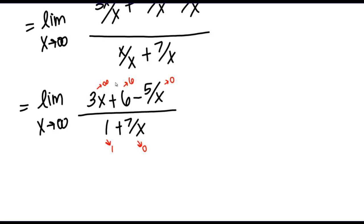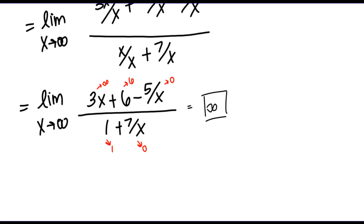So what do we have here? We have a bunch of constants — a 6, a 0, a 1, a 0 — and then we have this infinity on the top. Infinity plus 6 in the numerator is still infinitely large. So it looks like overall this limit is going to equal infinity. I just have infinity plus some constants on top and just a 1 in the bottom, so overall my limit is going to infinity.